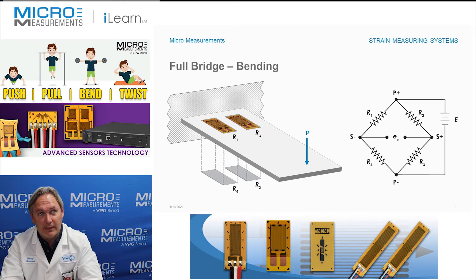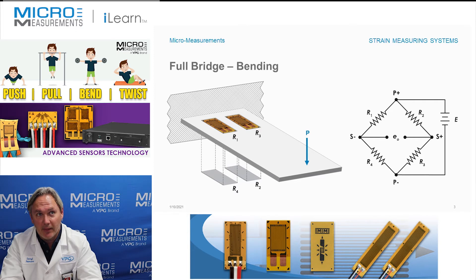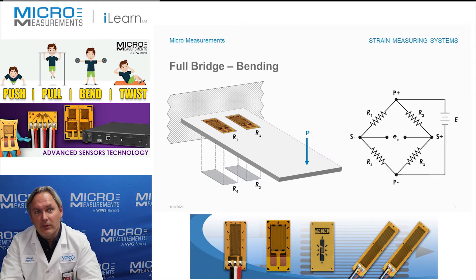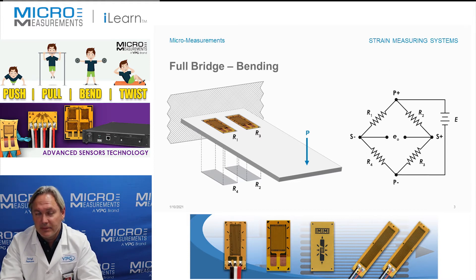We take that and connect it into our Wheatstone bridge. You'll notice P-plus and P-minus for the power coming in, and S-minus and S-plus for the signal coming out. Capital E represents the excitation supply voltage to the circuit, and small e-sub-O represents the signal coming out. We wire it such that R1 and R3 are in opposite arms, and R2 and R4 are also opposite each other.